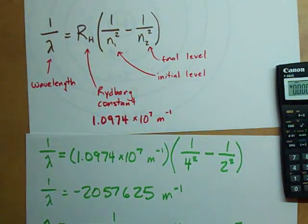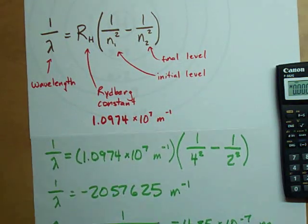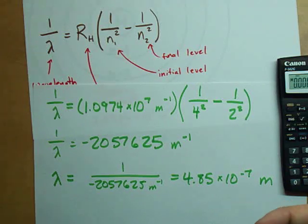Which is 4.85 times 10 to the minus 7. My units are meters now. Oh, you couldn't see any of that as it was happening. I'm going to keep going anyways.